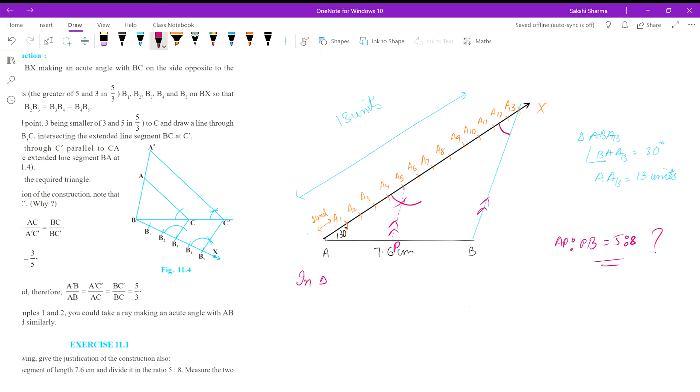So in triangle ABA13, we have a line segment from A5 up to AP which is parallel to the base of the triangle. By BPT—Basic Proportionality Theorem—the ratio of the parts of the other two sides will be equal. So AP over PB will be equal to AA5 over A5-A13.